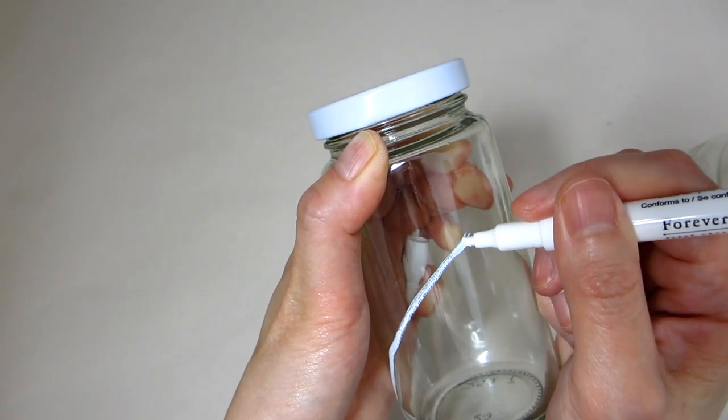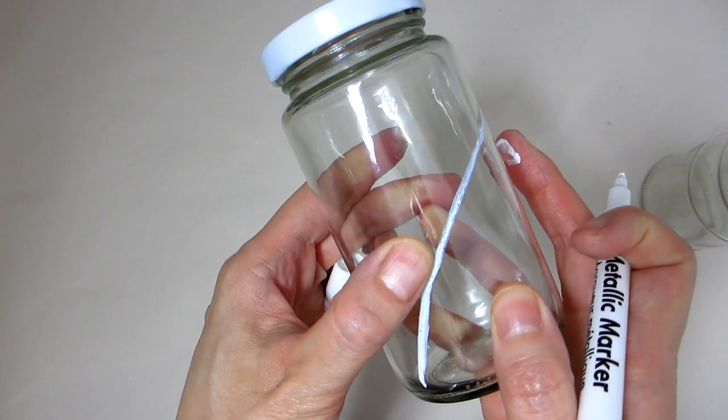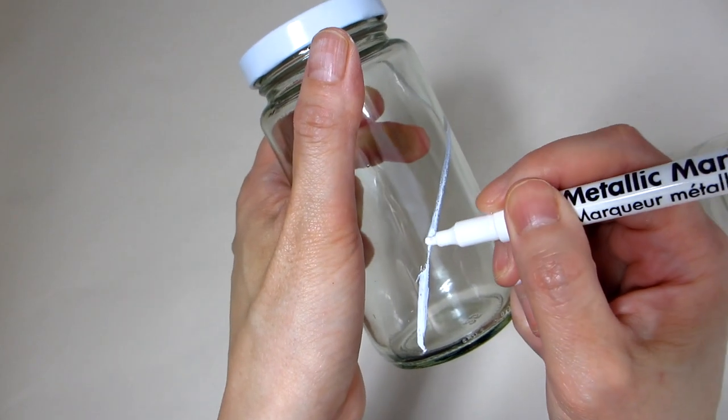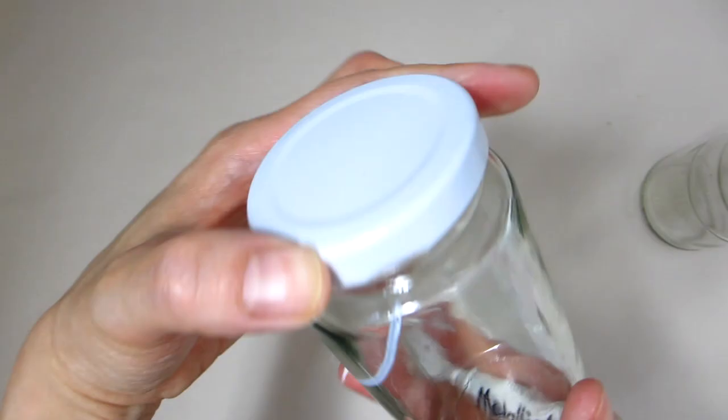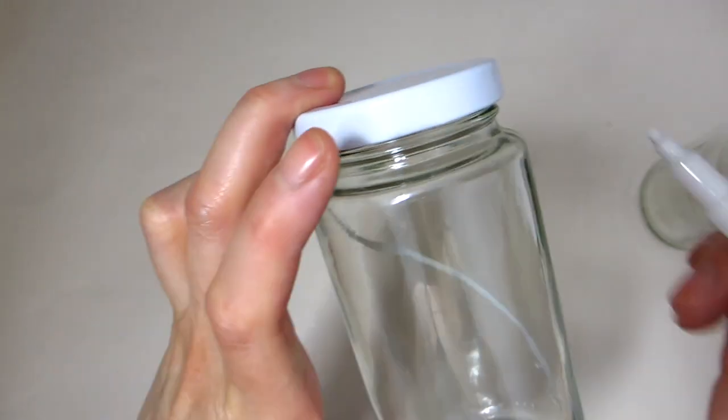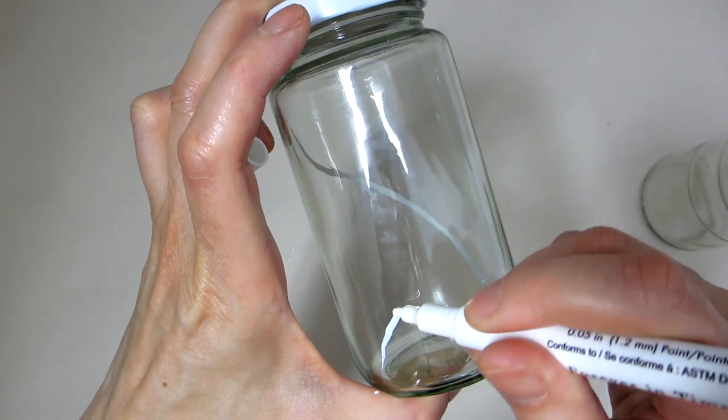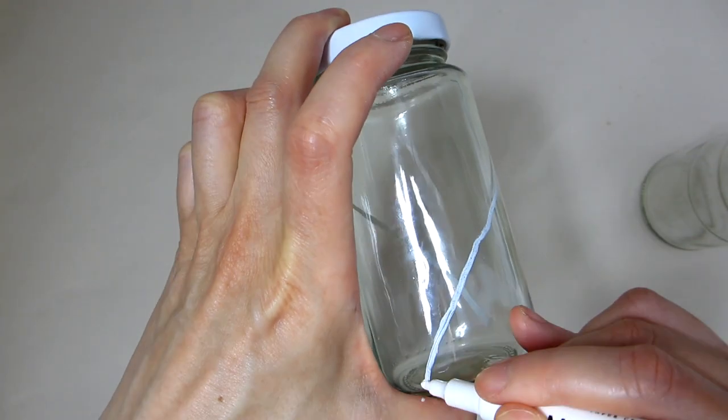Here, I'm using a white metallic marker to freehand a simple design on the first jar. Here, I'm just drawing a couple of curved lines. And if you don't like the shape of the lines, you can always wipe the markings off and redo it until you are satisfied.